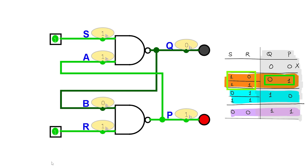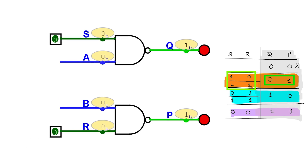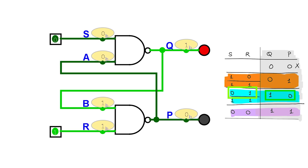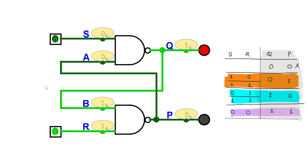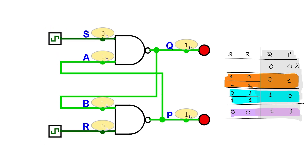Not only that, but since this input is zero, R can change without affecting the NAND output. Therefore in this case both inputs as one and one gives zero and one. Similarly we can set the inputs as zero and one — this sets the output to one and zero. Now even if S changes, causing one and one as inputs, the output remains one and zero. So we can say that when both inputs are one, the circuit memorizes and holds the previous output.